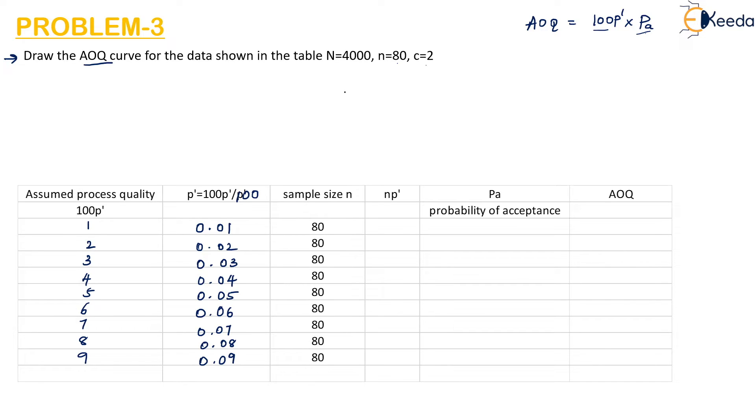In the question itself they have given sample size as 80. I have written it as 80 for all the points till 9. Now, n into P', we have already found the P' value and we know the n value. 80 x 0.01 we will get 0.8. 80 x 0.02 we will get 1.6. The same way we keep on multiplying these two numbers and we will get the answers as 2.4, 3.2, 4.0, 4.8, 5.6, 6.4 and 7.2.